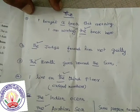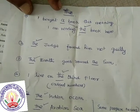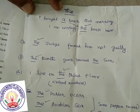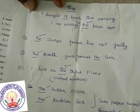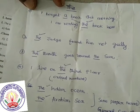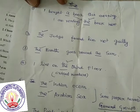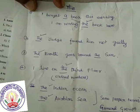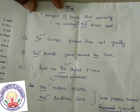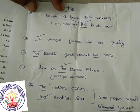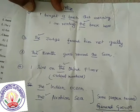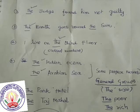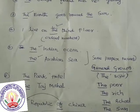We put 'the' before unique or universal references. I live on the third floor — first, second, third, fourth, fifth: these are ordinal numbers, so we put 'the'. The Indian Ocean, the Arabian Sea — before seas or oceans, we put 'the'.